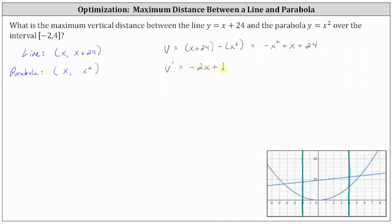There are no values of x where the first derivative is undefined, so we determine the critical number by setting the derivative equal to 0 and solving. We subtract 1 on both sides and then divide both sides by negative 2, giving us x equals one half.